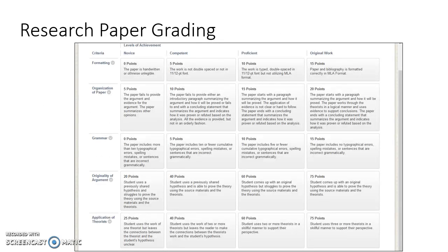Here is the research paper grading. You'll notice, unlike the first two assignments, this assignment will actually be graded on content. In addition to what we've been grading on — formatting, grammar, spelling, organization of paper — we're also going to evaluate the originality of your argument and how you apply the theorists to prove your point. You can see the grading rubric for this in Blackboard under My Grades, and when the research paper assignment is available, it will show there as well.